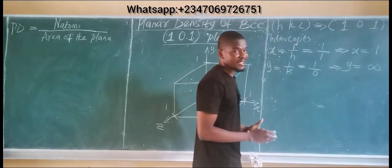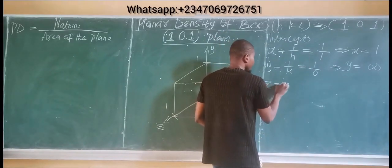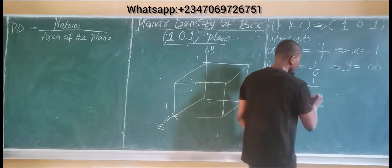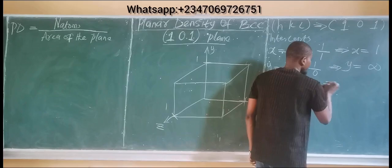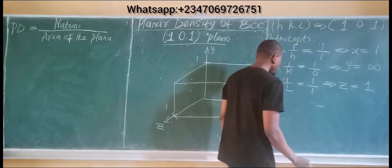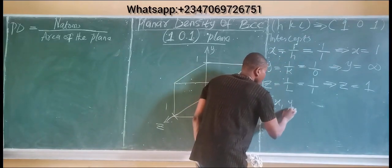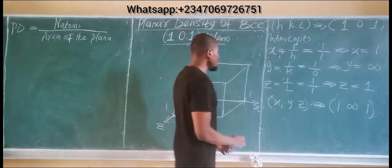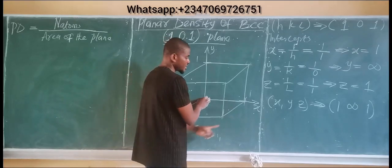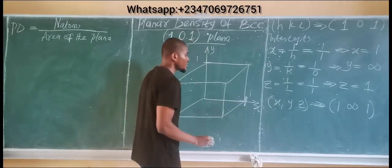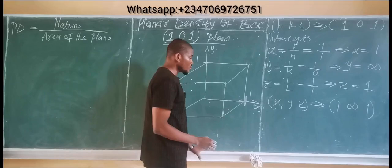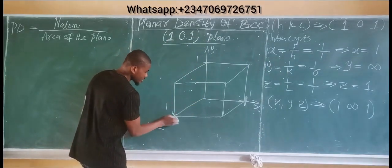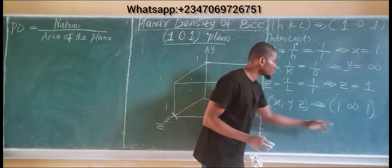The z-intercept is taken as 1/l, which equals 1/1 = 1, so the plane also cuts z at 1. Our intercepts x, y, z are 1, infinity, and 1. From the origin: it cuts x at 1 and z at 1, while y is at infinity — so from the origin, we mark these intercept points.